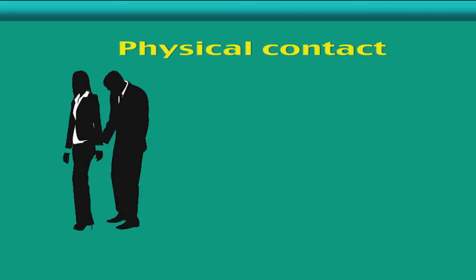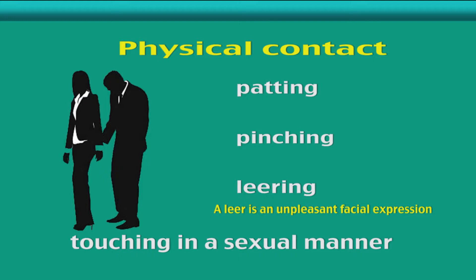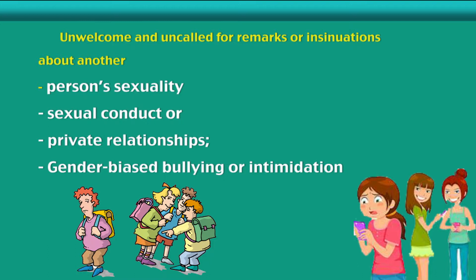What are some examples of sexual harassment and bullying? Physical contact, such as petting, pinching, leering, or touching in a sexual manner. Physical violence, including sexual assault.